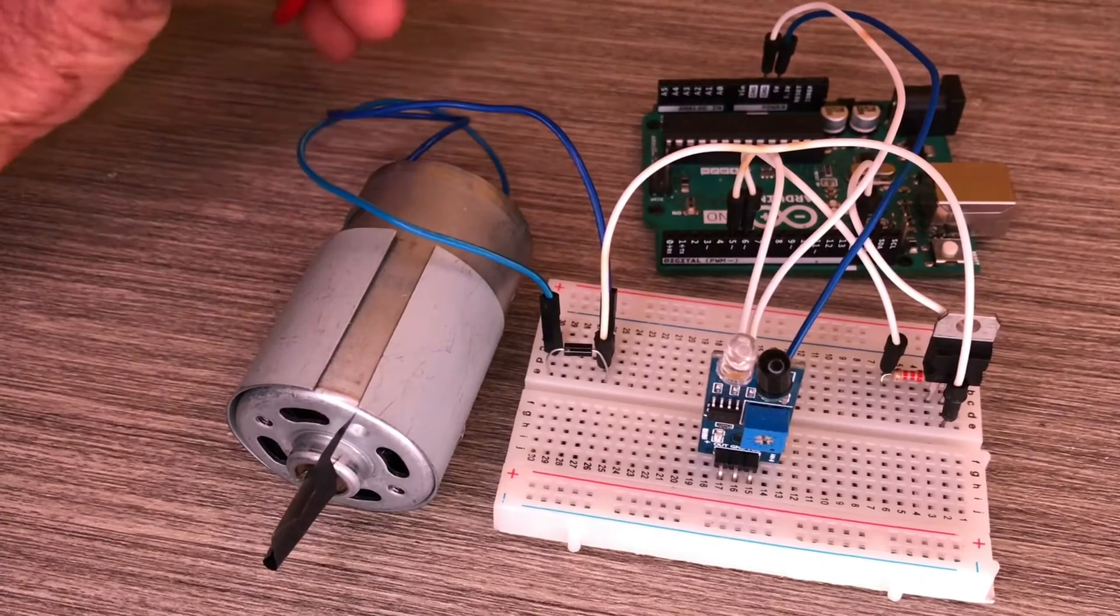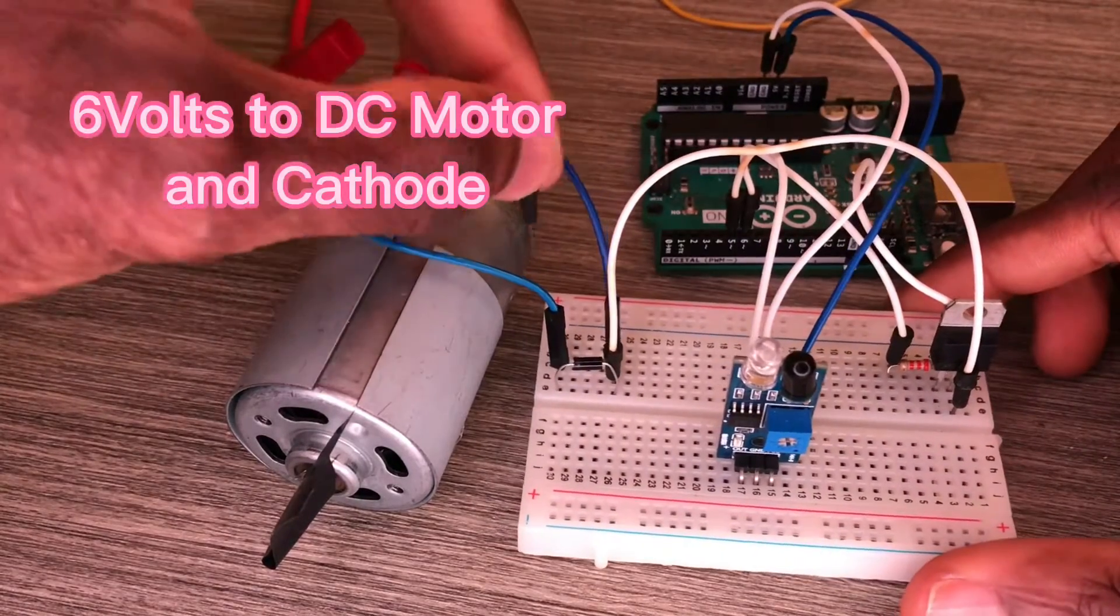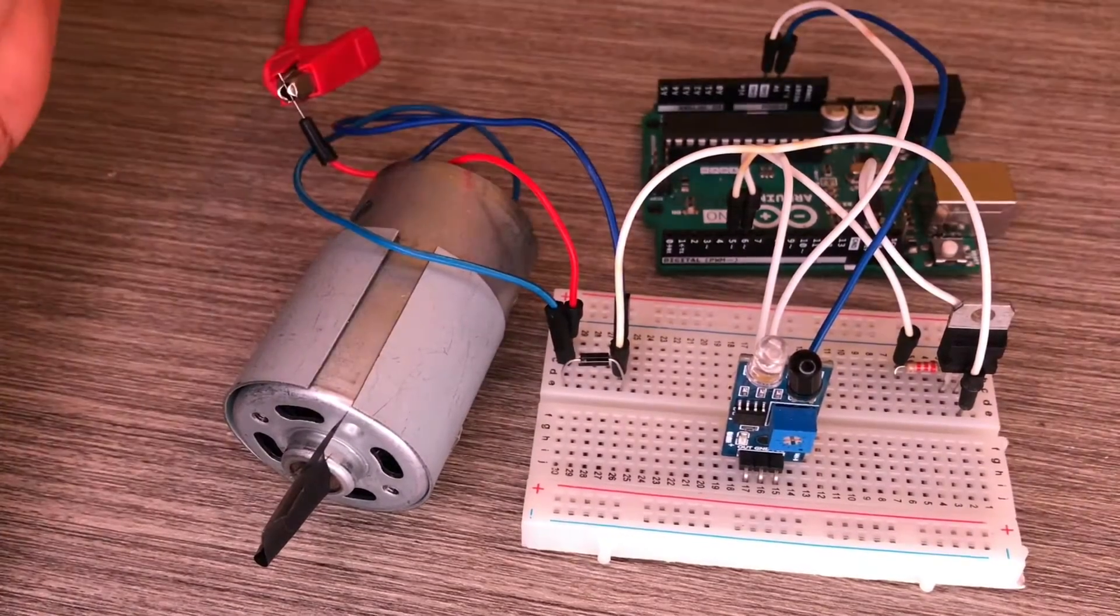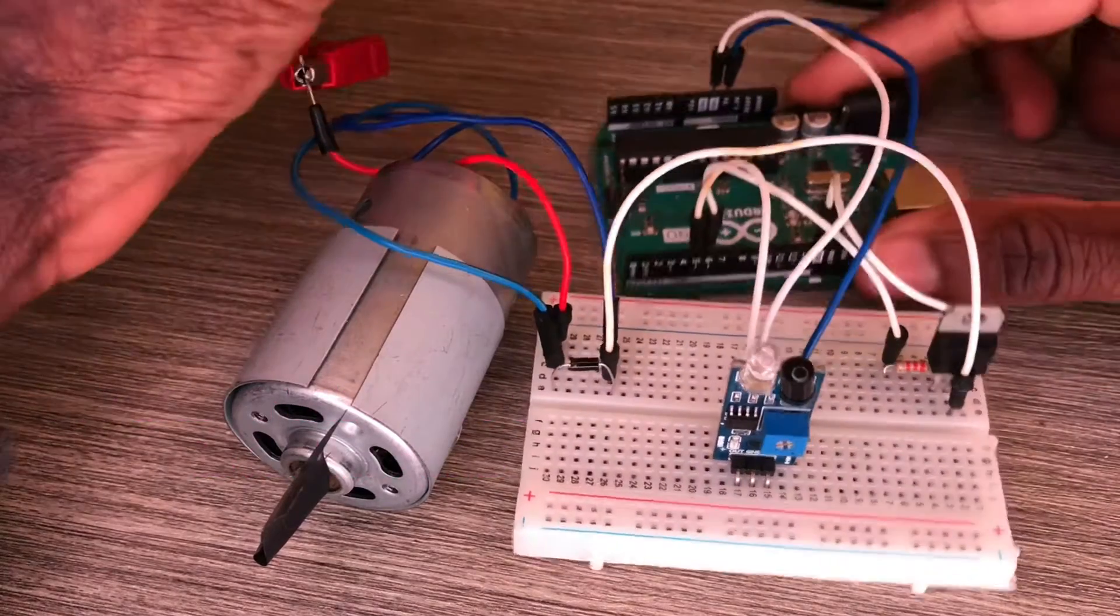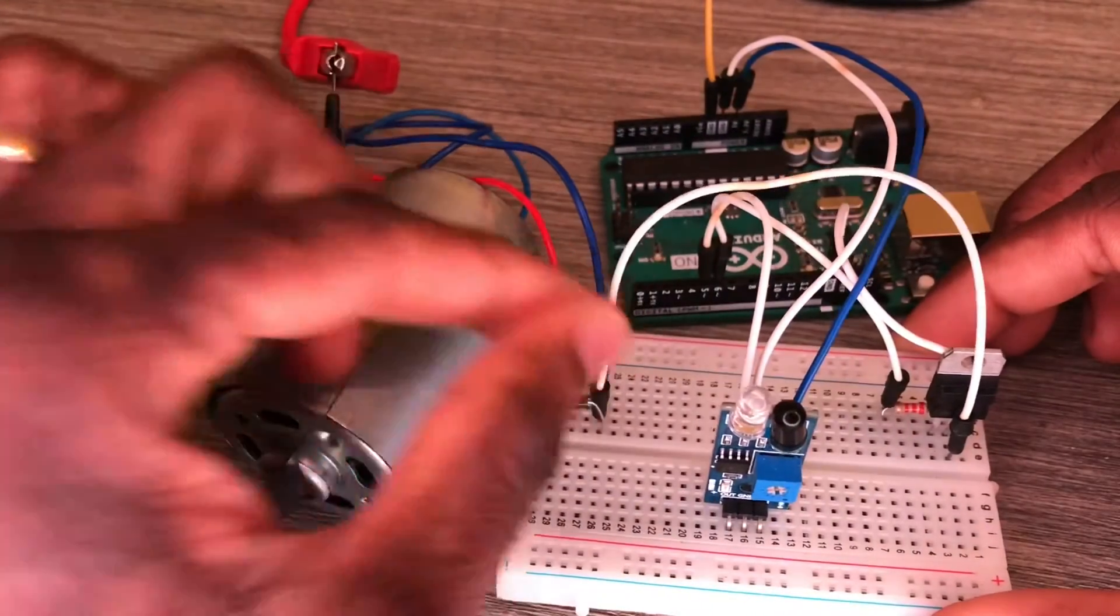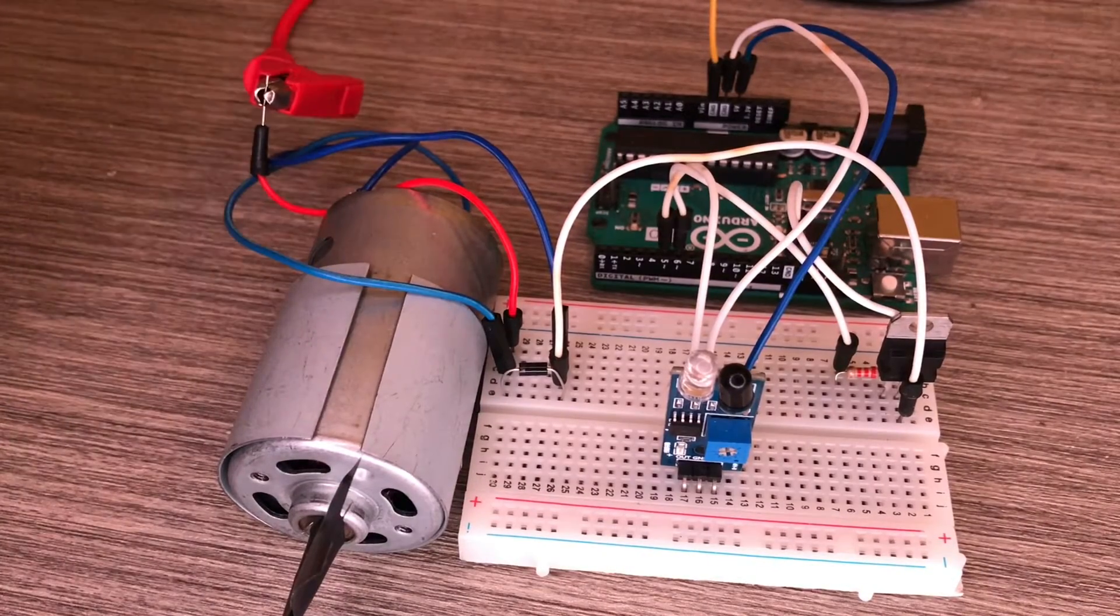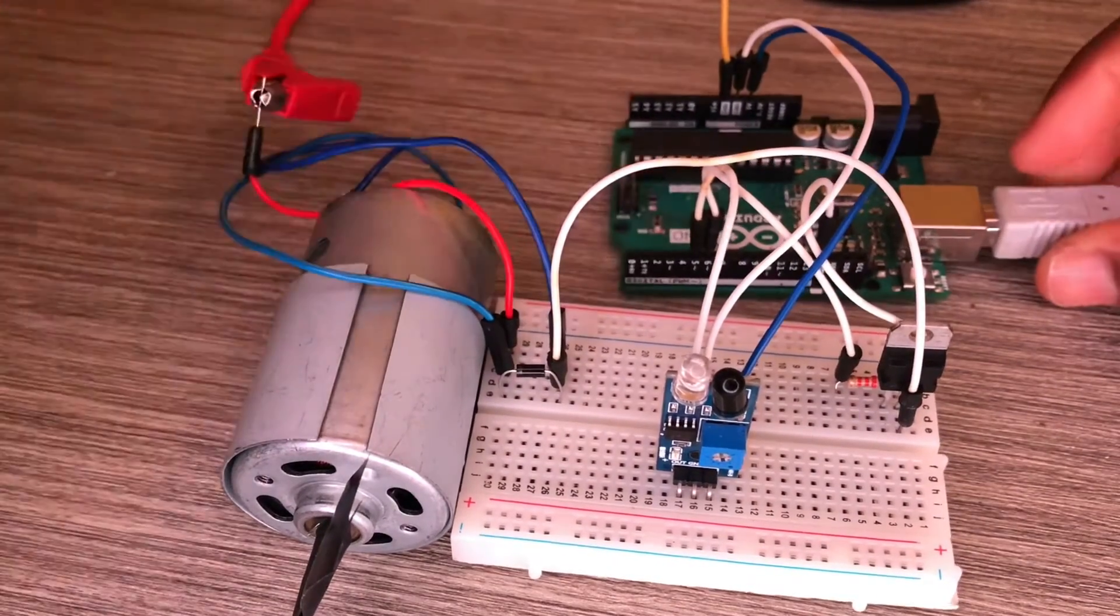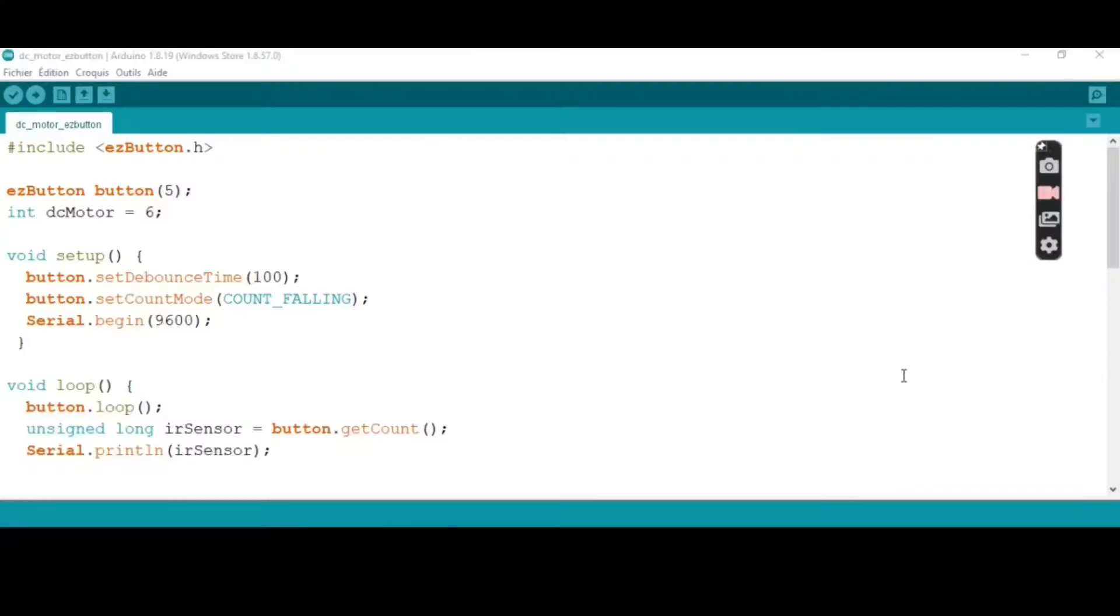We need two power sources. The first one is 6 volts - the positive goes to the cathode and the negative goes to Arduino ground, one of the Arduino grounds, like that. We have the power source from the Arduino cable.